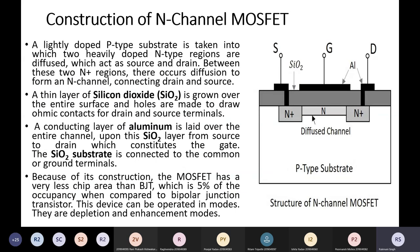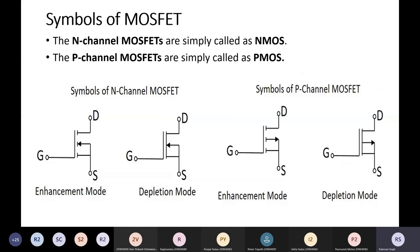Here is the construction of N-channel MOSFET. For constructing the N-channel MOSFET, first we take the opposite type of substrate — if it is N-channel, we take P-type substrate; if it is P-channel, we take N-type substrate. So here, since N-channel MOSFET is required, we take a P-type substrate. Then we heavily dope two N-plus regions, which act as source and drain. A student asked: D is for drain, S is for source and G is for gate. MOSFET is a three-terminal device.